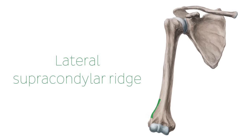All the directional terms are covered in other videos. Knowing the words lateral, medial, superior, and inferior will automatically tell you which direction to look for the landmark. So in the case of the lateral supracondylar ridge, we already know that it's on the lateral aspect of the bone and that it's a ridge.